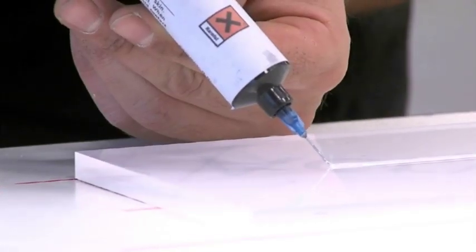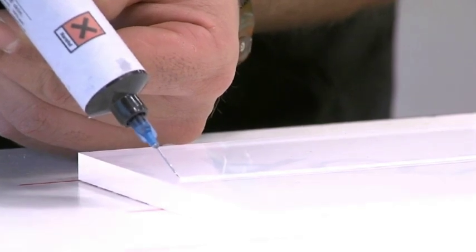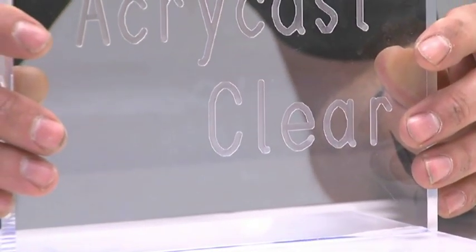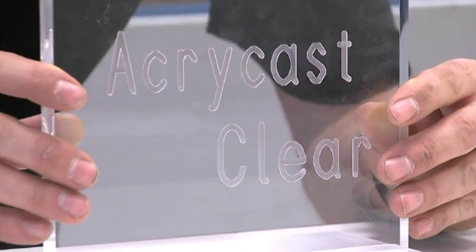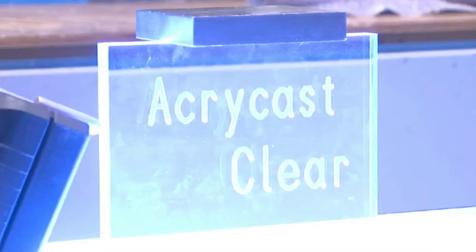For bonding applications where the joint will be highly visible, UV curing adhesives are recommended to provide high quality joints with no bubbles or imperfections. These adhesives have very low viscosity and allow the sheets to be repositioned and any excess adhesive to be wiped off prior to curing with a UV light source.